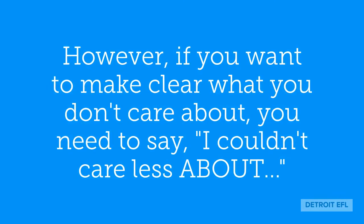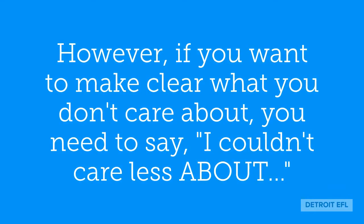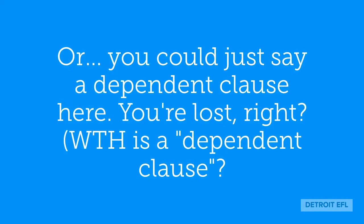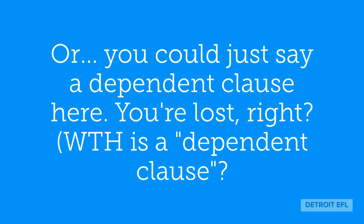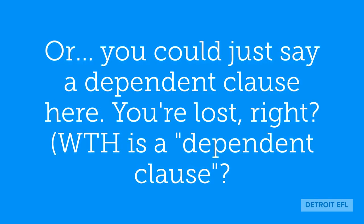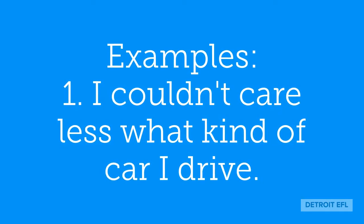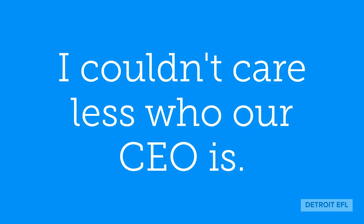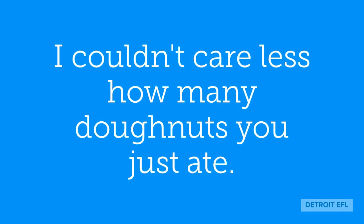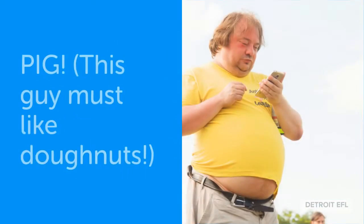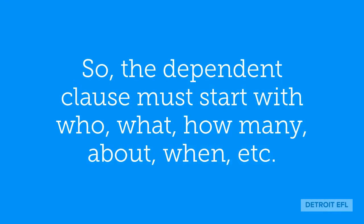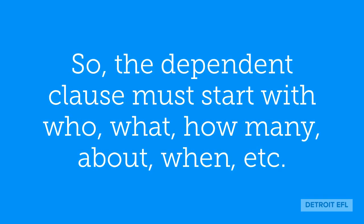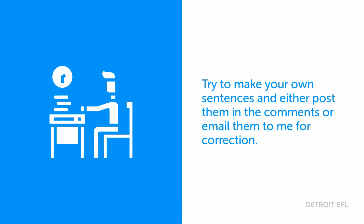However, if you want to make clear what you don't care about, say 'I couldn't care less about...' or use a dependent clause — starting with who, what, how many, when, etc. For example: 'I couldn't care less what kind of car I drive.' 'I couldn't care less who our CEO is.' 'I couldn't care less how many donuts you just ate.'